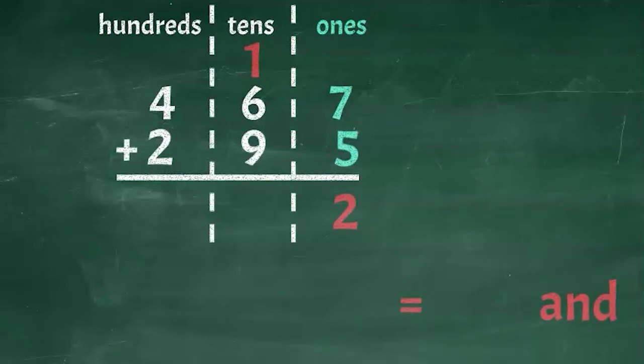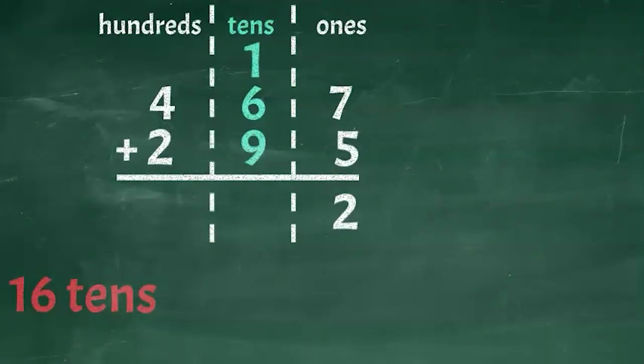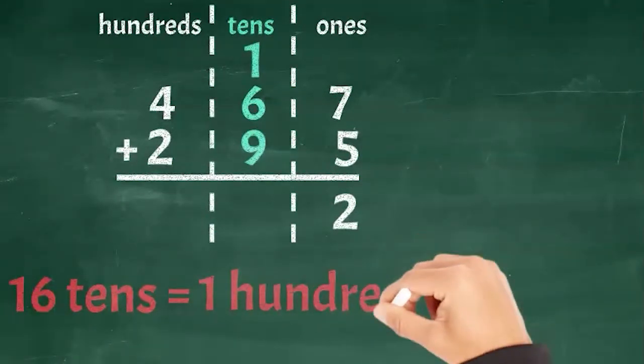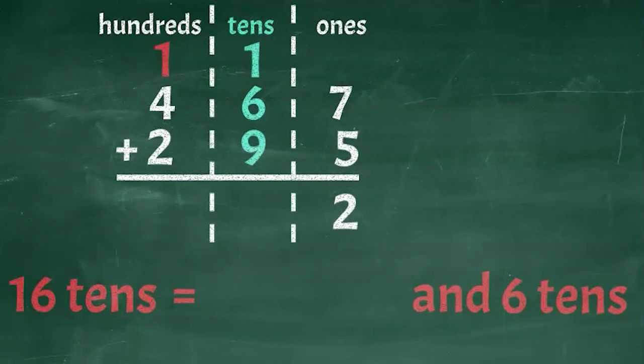I think I get it now. Let me try adding the tens. Since we carried over that one, now there are three numbers to add in the stack. 1 plus 6 plus 9 equals 16. And then we can rewrite 16, just like we did before. 16 tens equals 100, and 6 tens. So place that 100 above the hundreds place stack and place the 6 below the tens place stack.